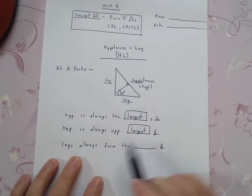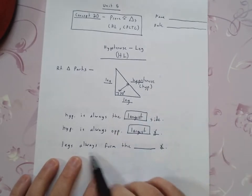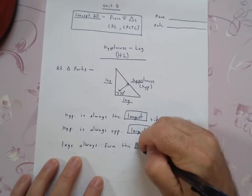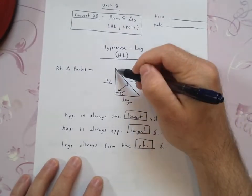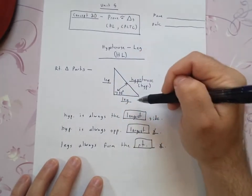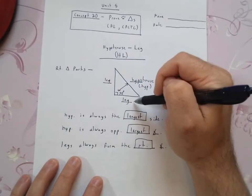The other thing that you need to understand that will always help you know where the hypotenuse and legs are, the legs always form the right angle. Look right here, my right angle. It is formed by my two legs. So that's important to make sure that you know. The legs always form the right angle.